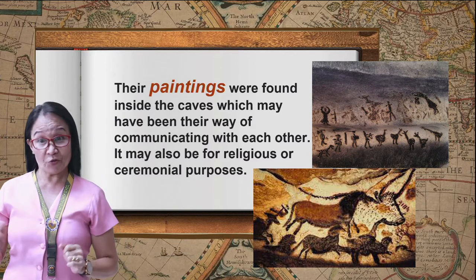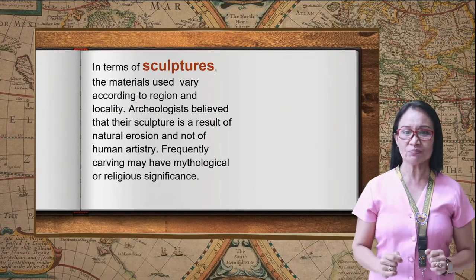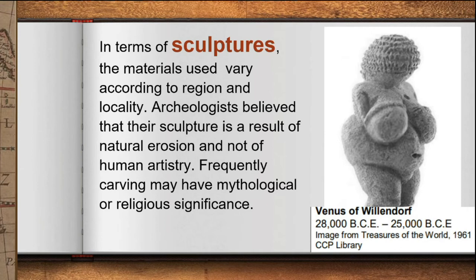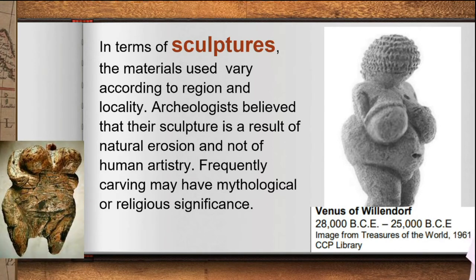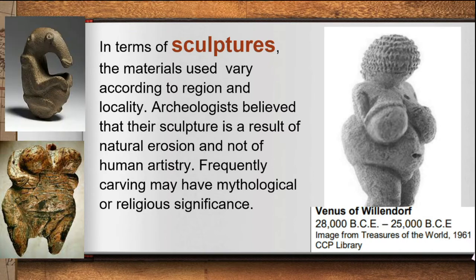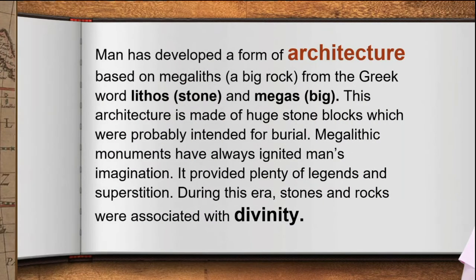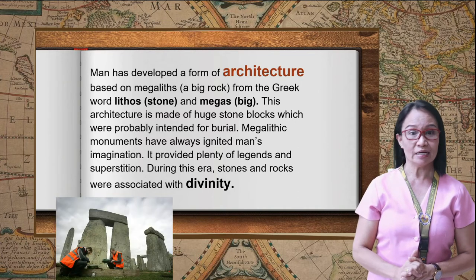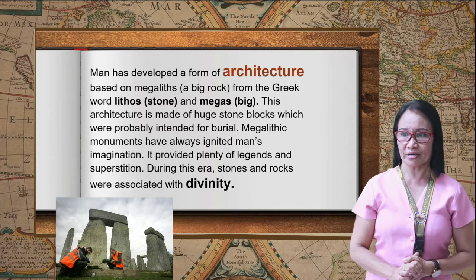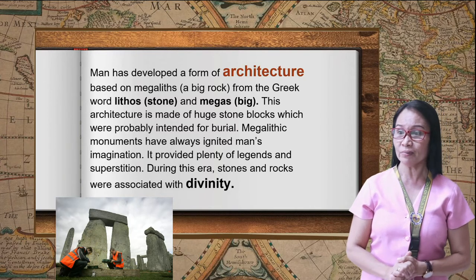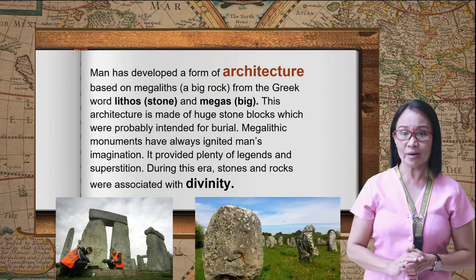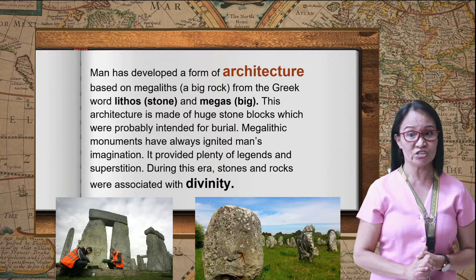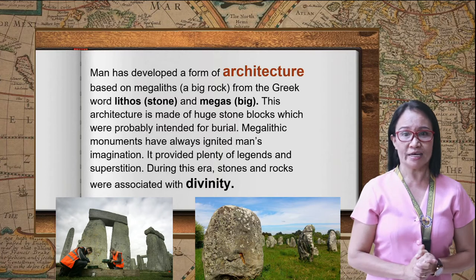Cave paintings may also have been for religious or ceremonial purposes. In terms of sculpture, materials used varied according to region and locality. Archaeologists believe that some sculpture resulted from natural erosion rather than human artistry. Carving may have had mythological or religious significance. Man also developed a form of architecture based on megaliths — from the Greek words meaning great stones — made of huge stone blocks, probably intended for burial. Megalithic monuments have always ignited the human imagination, providing plenty of legends and superstition.